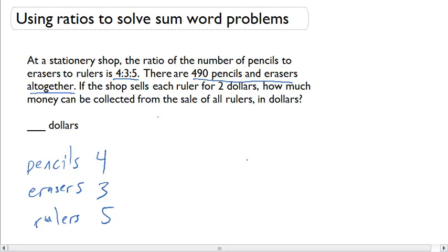So, ultimately what I am going to need is the total number of rulers that are sold. But I am not given that. All I am given is this ratio. And I am actually given a total of pencils and erasers. So, let's use this total to figure out how many rulers we sold.